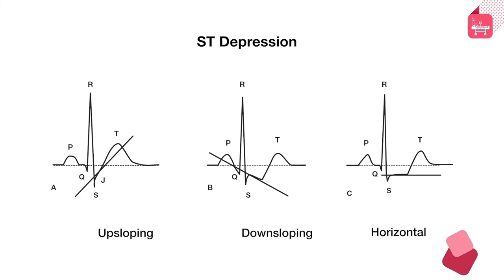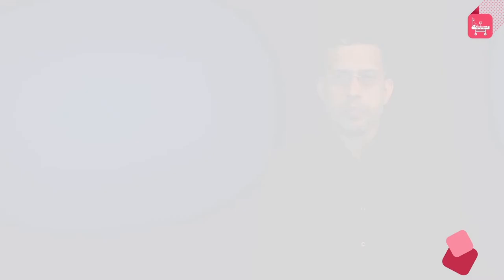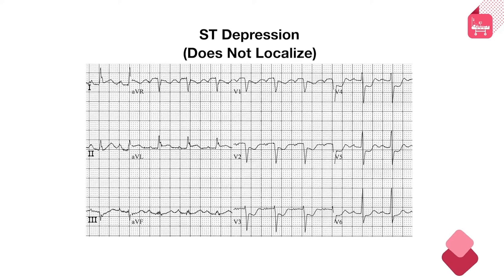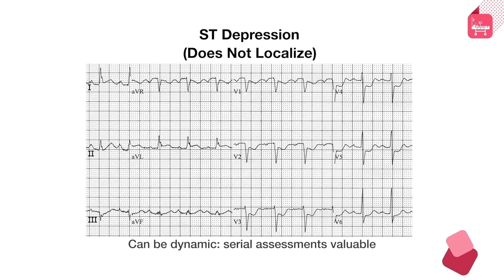Horizontal ST depression parallel to the isoelectric baseline is highly suggestive of ischemia, whereas up-sloping and down-sloping patterns are less specific and could have other causes. The presence of ST depression can diagnose ischemia but cannot necessarily localize the affected territory — unlike Q waves. As shown in this ECG with ST depression from V1 to V5, we cannot interpret this as ischemia necessarily only in the anterior wall.